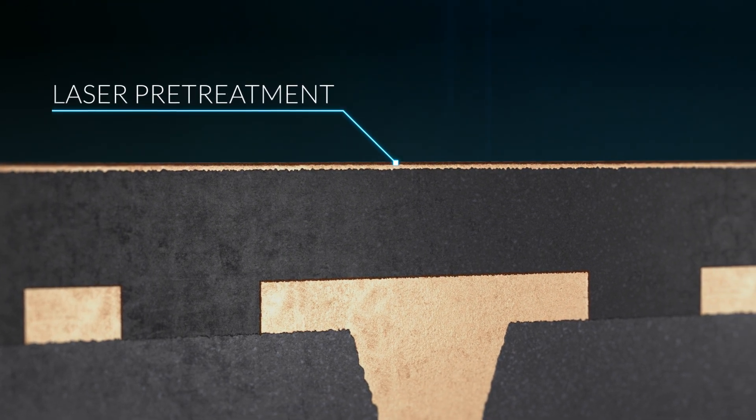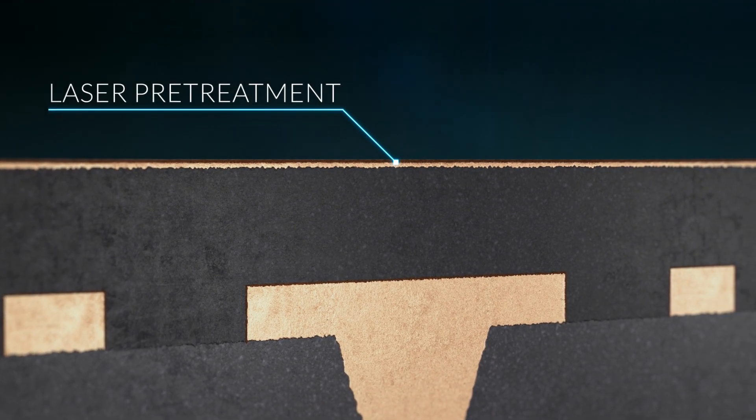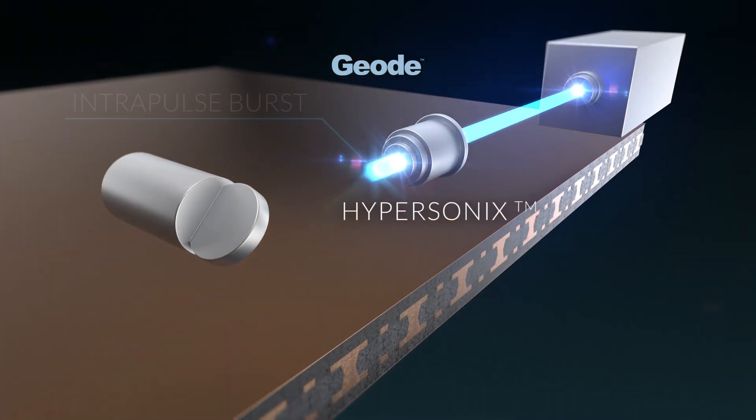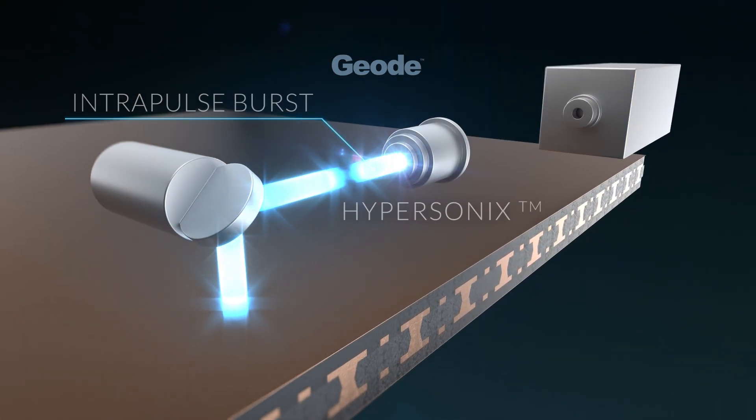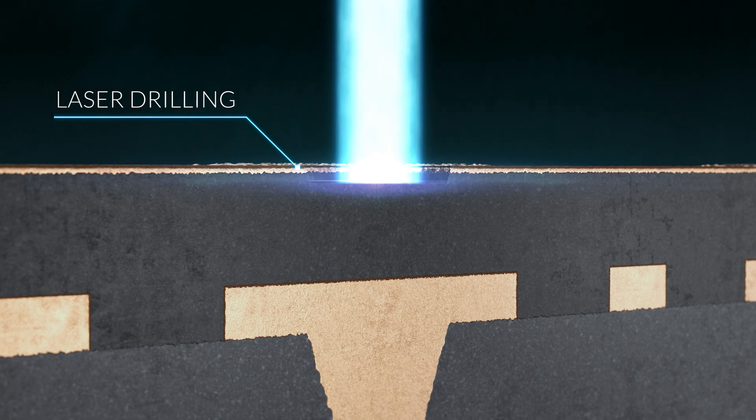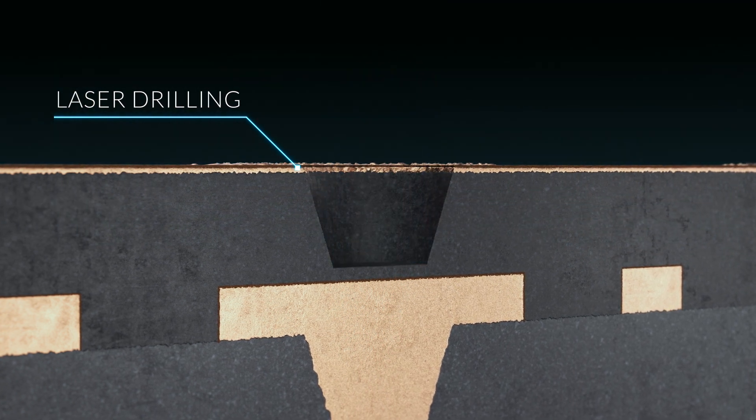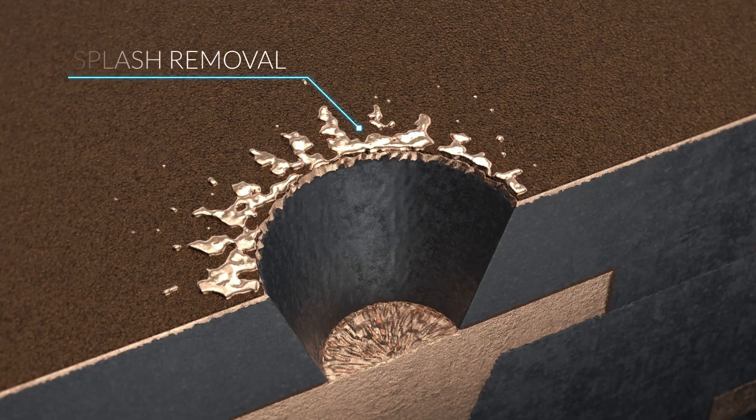The combination of MKS laser pretreatment know-how and geode laser capabilities using hypersonics and intrapulse burst technology for best-in-class via formation using CO2 laser drilling techniques in combination with copper splash removal.